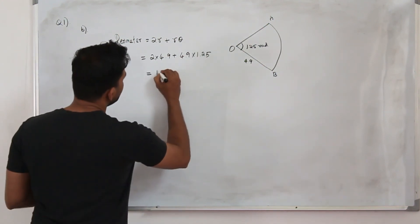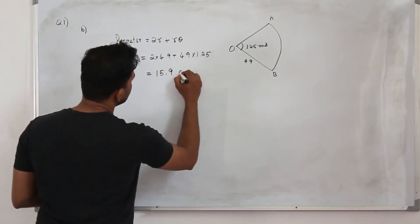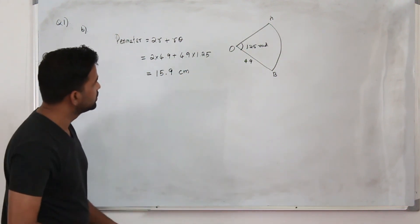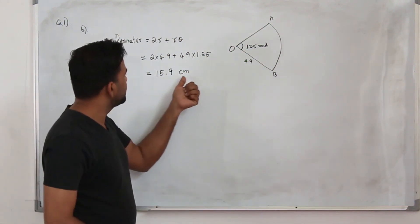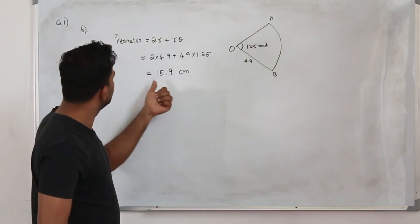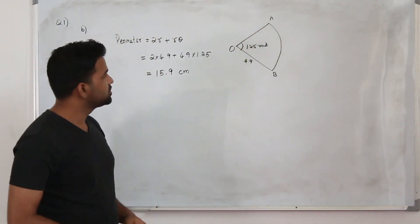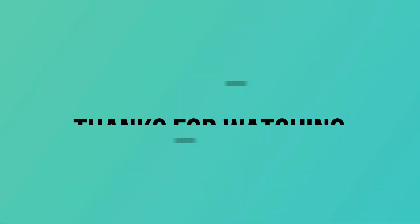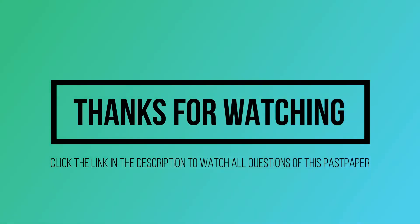Now plug in all the values here. You got the perimeter already: 2 times 4.9 plus R times theta, 4.9 times 1.25, which is 15.9 centimeters. 15.9 centimeters—not centimeter square, because we are talking about perimeter here. So the perimeter is 15.9 centimeters. And this question has 3 marks.